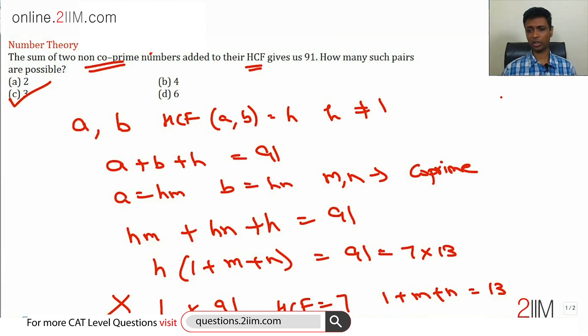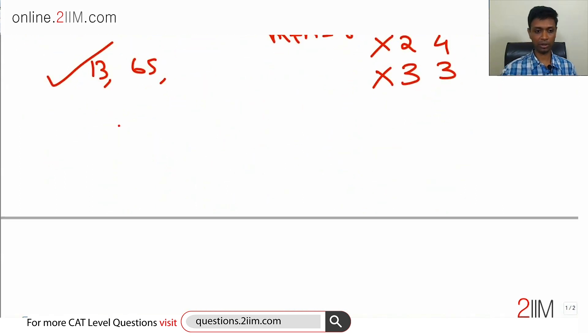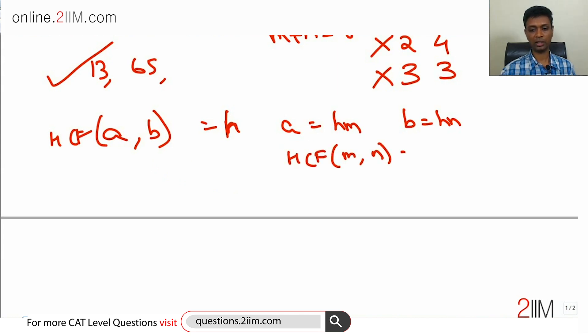Use this opportunity to revisit that bit of theory. If you have two numbers, a and b, such that HCF of a comma b is equal to h, then a can be written as h into m, b can be written as h into n. This we all know. What is built into this is HCF of m comma n equal to 1. m and n are coprime.